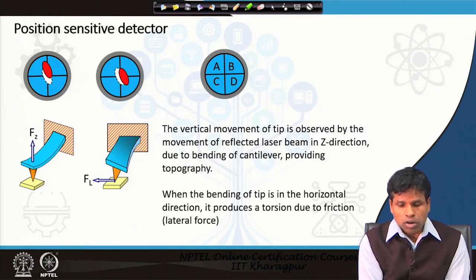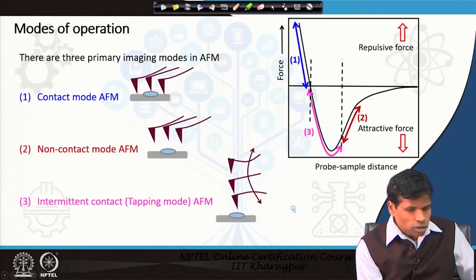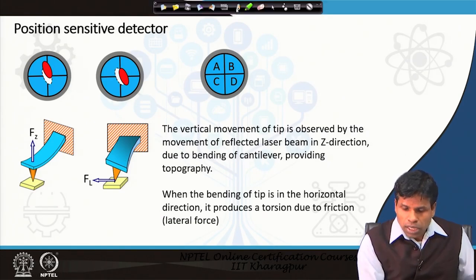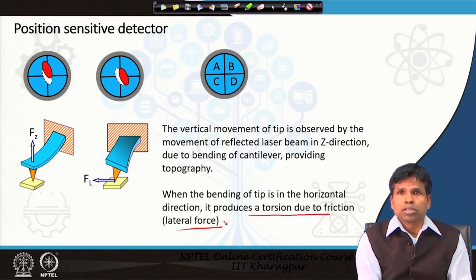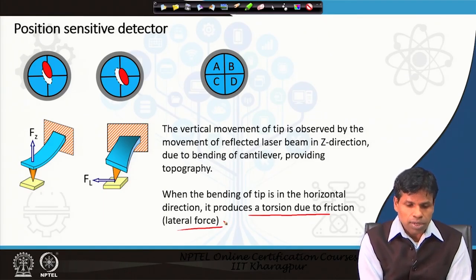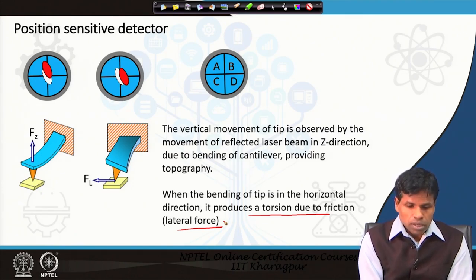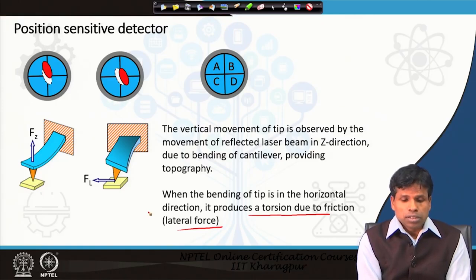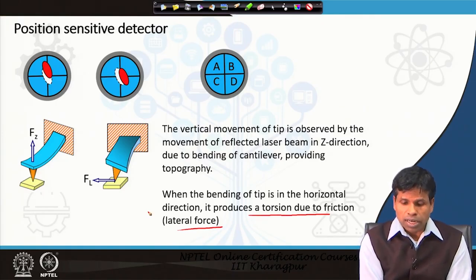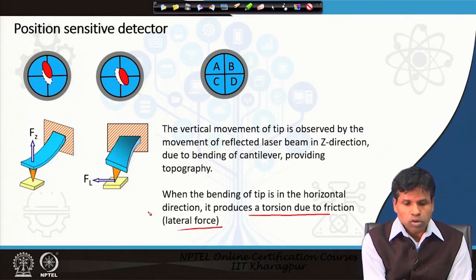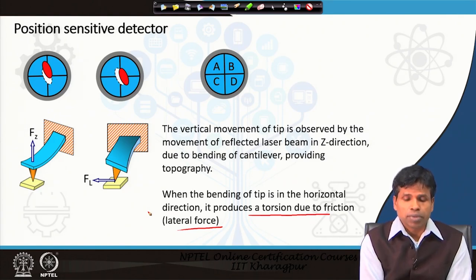These horizontal movements or bending of the tip occur due to torsion, frictional force, or lateral force, and this occurs only when the tip is in contact with the sample. This allows us to measure the lateral force and frictional force on the sample surface by knowing how much bending occurs at each location, thereby getting information about the frictional force on the surface.